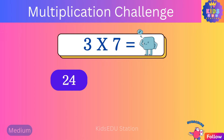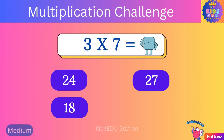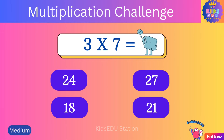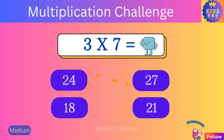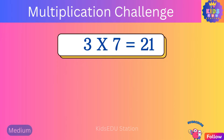Twenty-four, twenty-seven, eighteen, twenty-one. Three times seven is twenty-one.